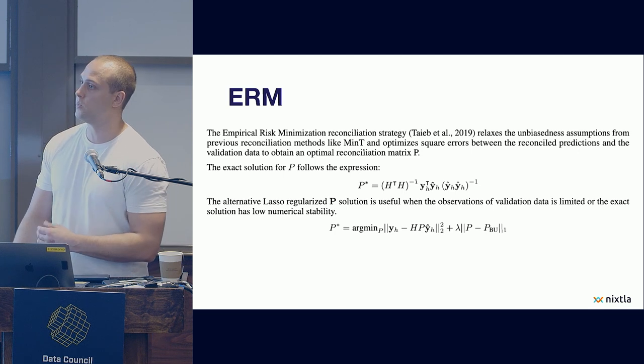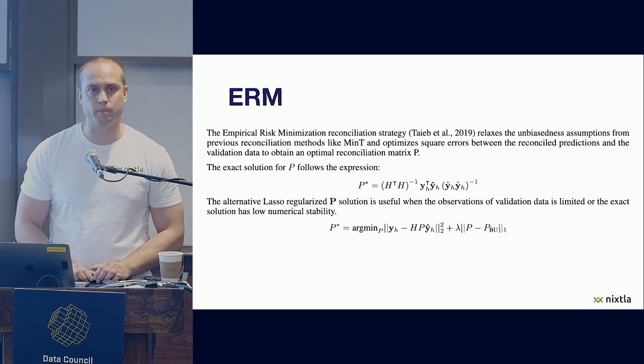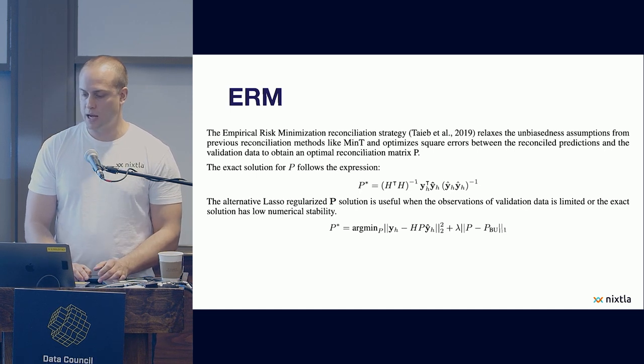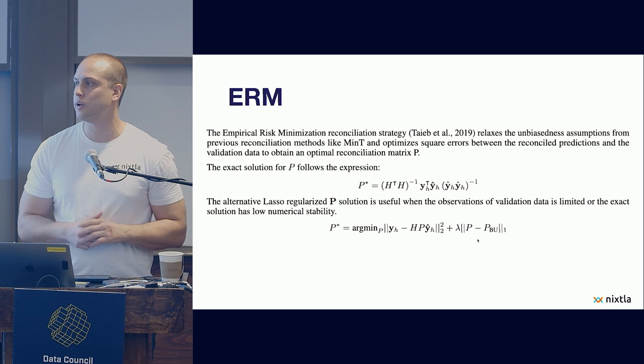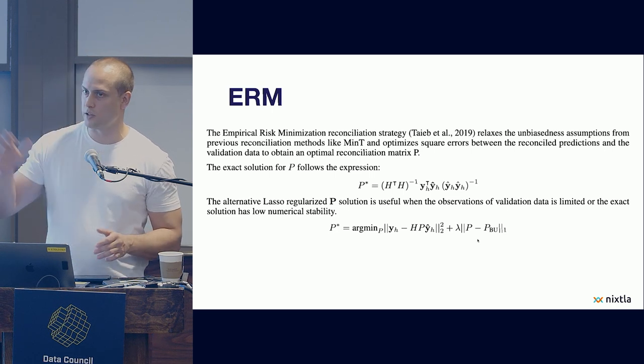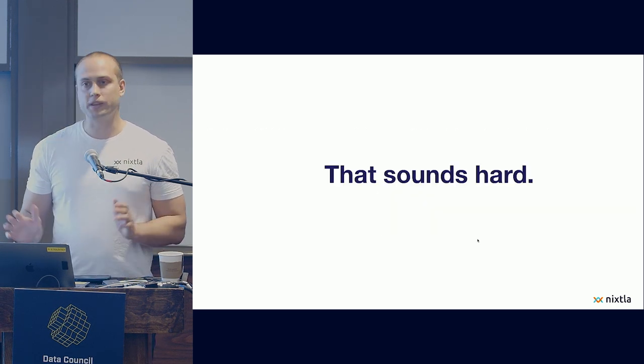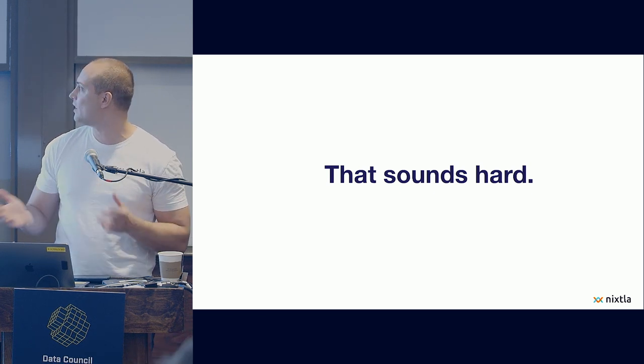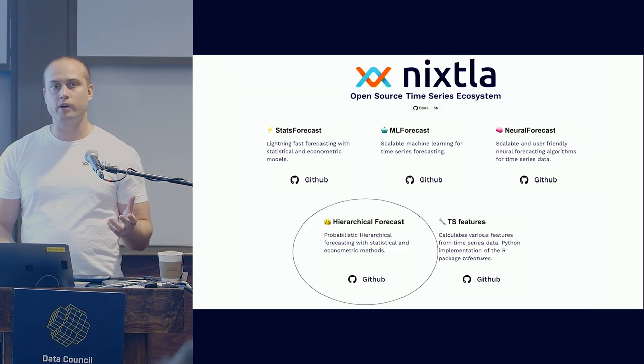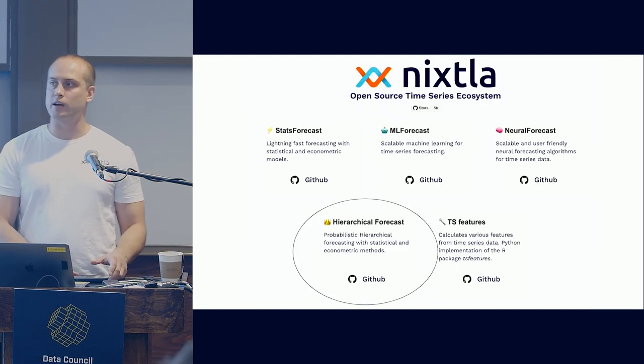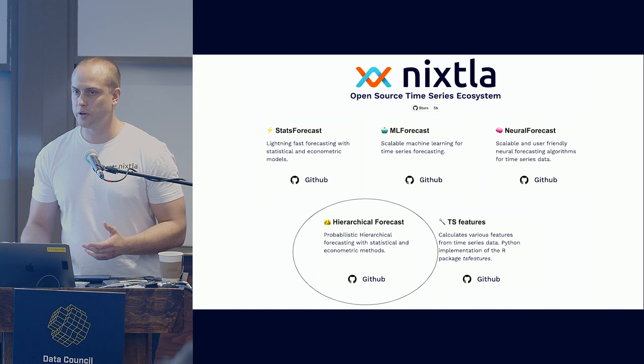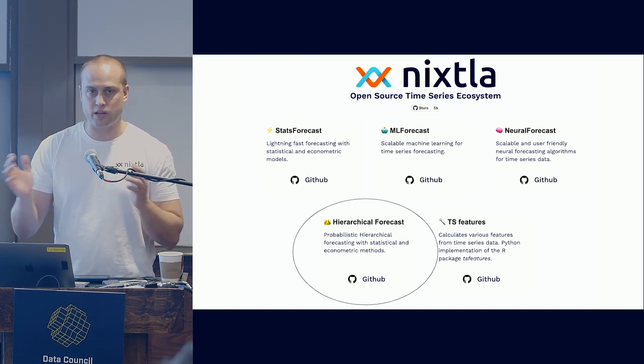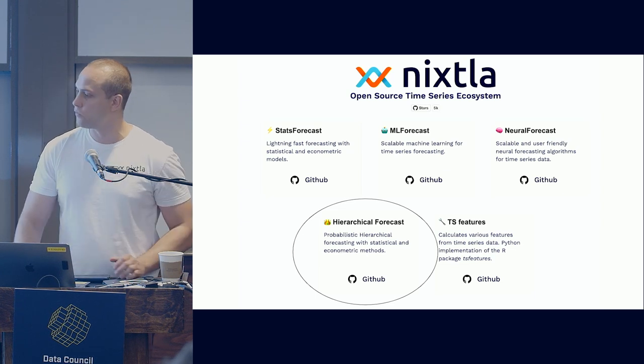And here, we're thinking more of an empirical approach to error minimization. This method, which is called Empirical Risk Minimization Reconciliation Strategy, was proposed by Taieb also in 2019. And here, after doing this, we just do some regularization with LASSO, so it's not very volatile. Well, that sounds really hard, especially if you are working as a tourism minister in Australia and you are not really that into linear algebra. And that's why we created this library called Hierarchical Forecast, so practitioners could start reconciling forecasts without doing all the complicated matrix operations that are required for these methods.